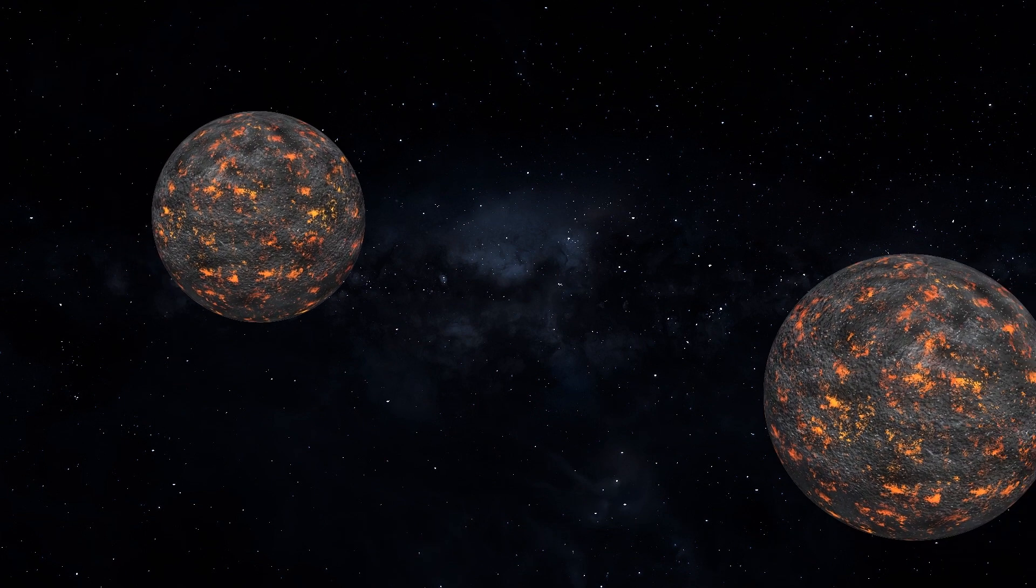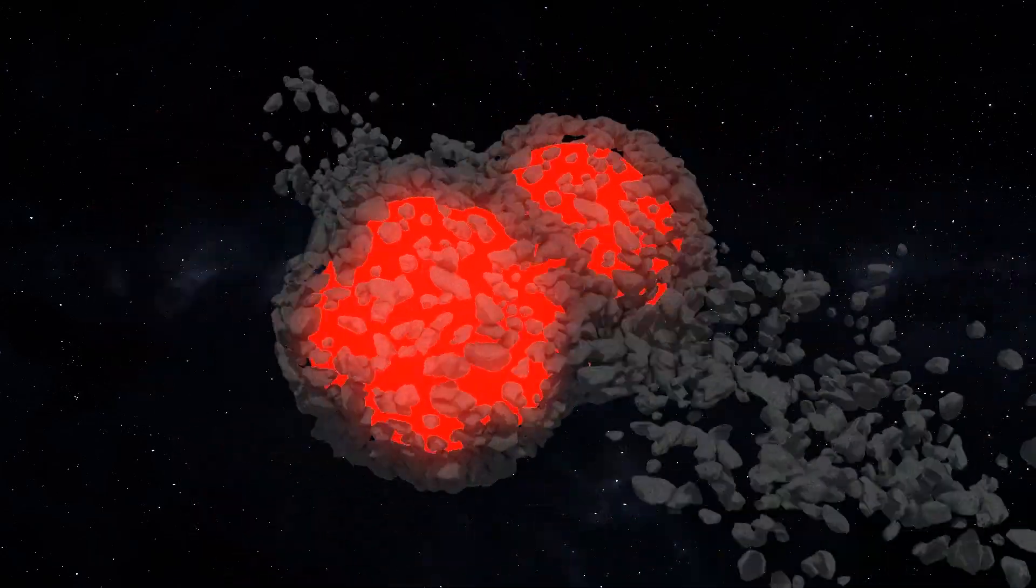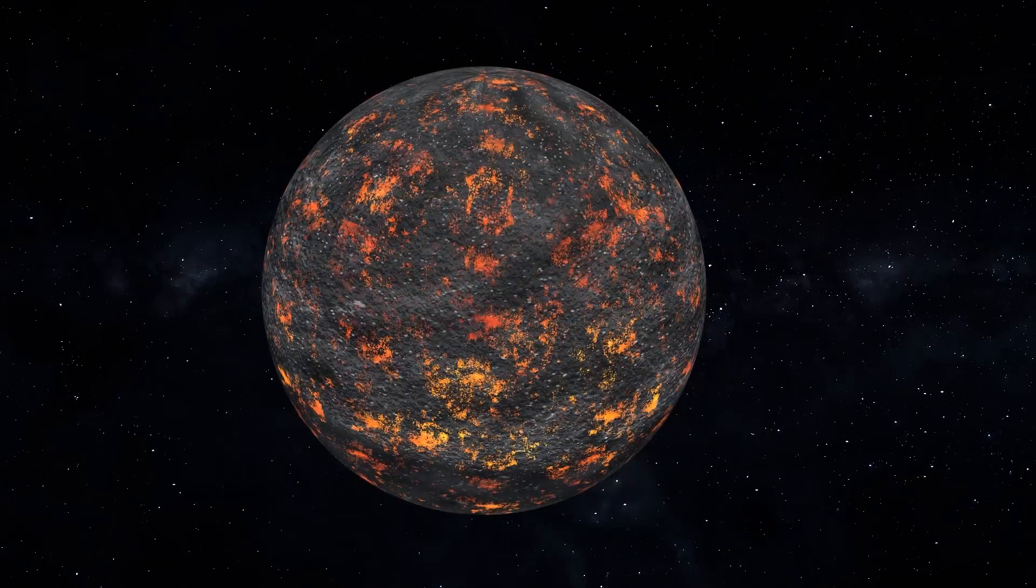Earth and Mars were likely generated by regular collisions between giant moon-to-Mars-sized rocks rather than tiny pebbles clumping together, according to a new Science Advances study.